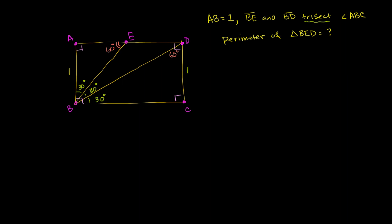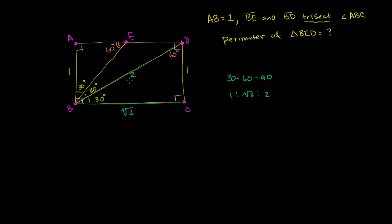Here we have the shortest side — the side opposite the 30-degree angle — and it equals 1. In a 30-60-90 triangle, the sides are in the ratio 1 to √3 to 2. So if the 30-degree side is 1, the 60-degree side is √3. That gives us the entire base of the rectangle: √3. And the hypotenuse is 2 times the shortest side, so 2 times 1 equals 2.